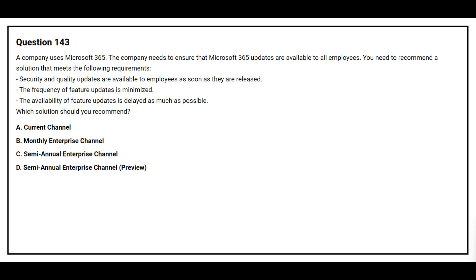Option B: Monthly Enterprise Channel. Option C: Semi-Annual Enterprise Channel. Option D: Semi-Annual Enterprise Channel Preview. The requirement is to minimize the frequency of feature updates and delay their availability as much as possible. The correct answer is Option C, Semi-Annual Enterprise Channel.